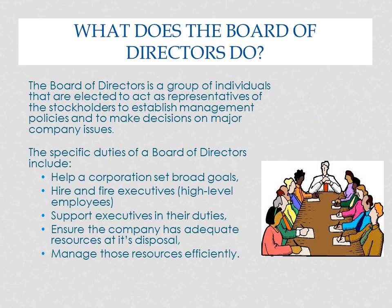What does the board of directors actually do? They are a group of individuals who are elected to act as representatives of the stockholders, to establish management policies and to make decisions on major company issues. They help set broad goals, they hire and fire high-level executives like the CFO — chief financial officer — and the CEO — chief executive officer. They ostensibly are supposed to support the executives in their duties by ensuring the company has adequate resources at its disposal, and they manage those resources efficiently.